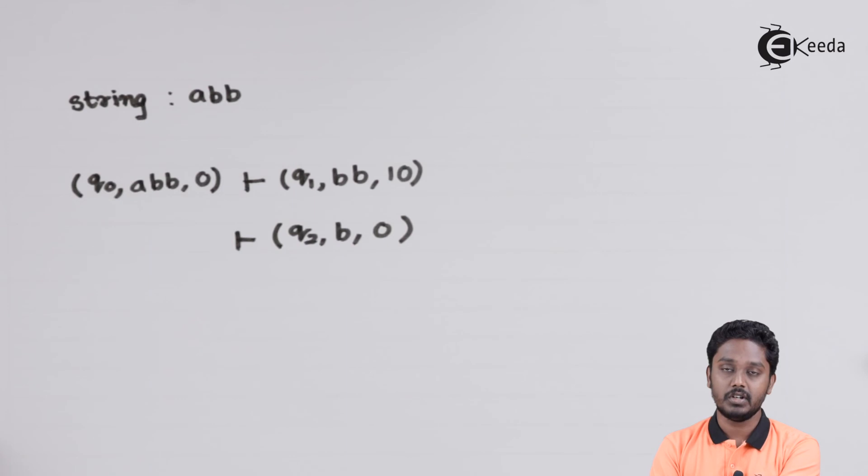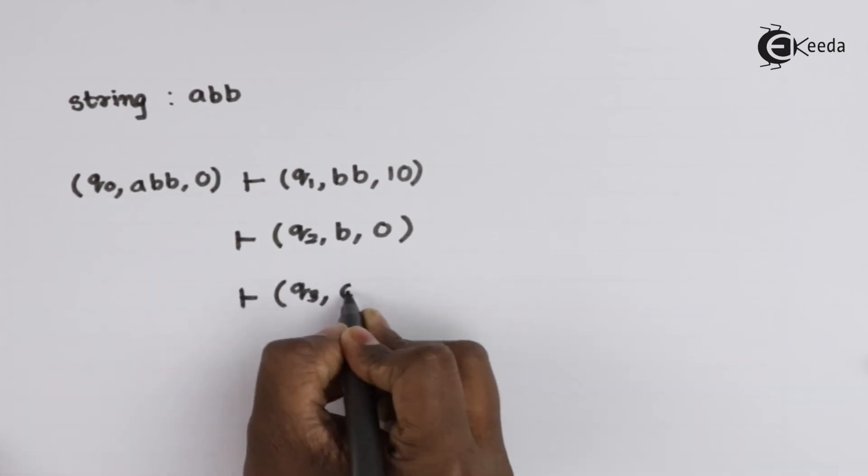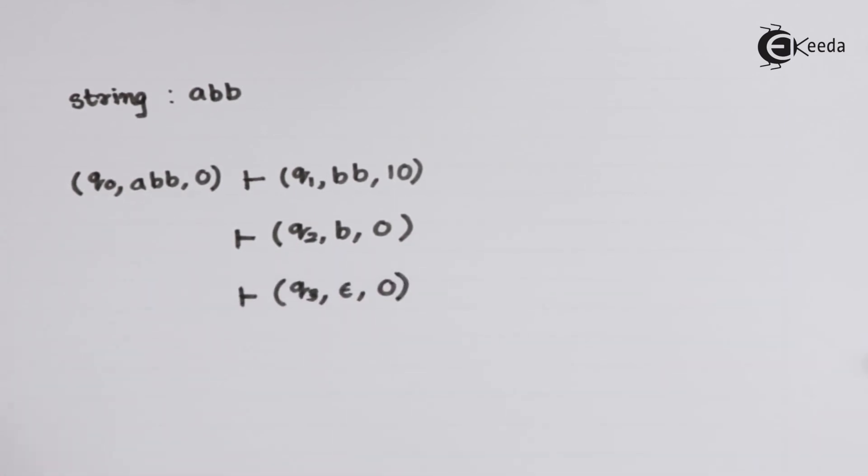You will see that, at the end, we are reaching to a non-final state Q3, because we end with the string ABB. And we see that, ABB is not actually satisfying the condition of the language, and hence, we are going to a non-final state. And hence, we can say that, this particular string is rejected.